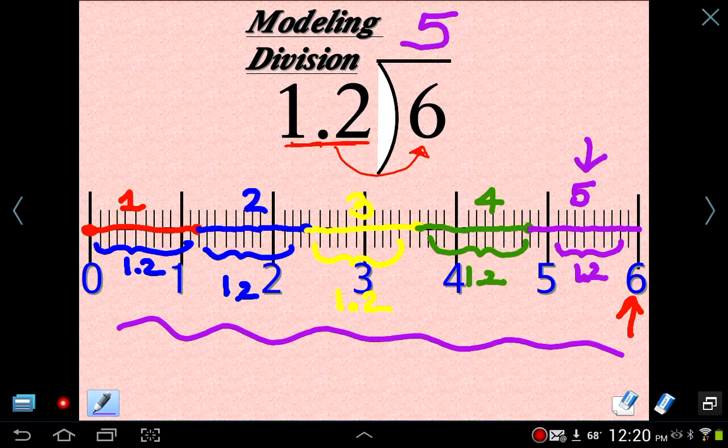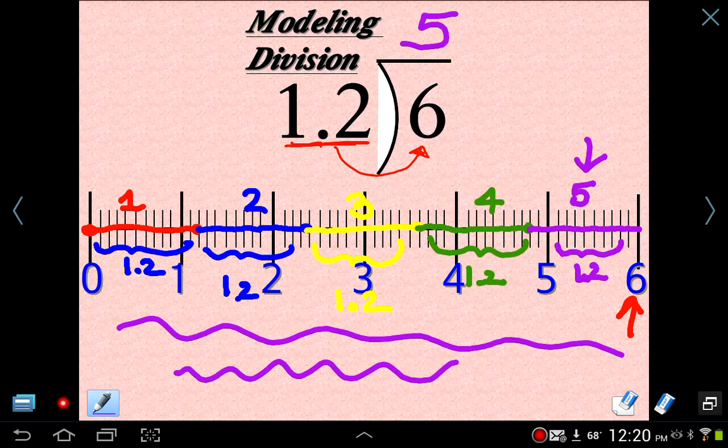Now I could have drew rectangles, six rectangles, and divided them into tenths. I could have done that. I could have drawn circles, divided them into tenths, and figured out how many 1.2's go into it. Any model works. Number line model seems to work pretty well, though, because it's easy to divide up. Circles, maybe not so much.